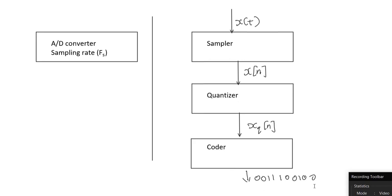Then comes the coder, which takes that analog signal and converts it into a digital stream of bits. For example, you can think about representing each number with a 16-bit two-byte value, four-byte value, or converting it into double numbers. What you do here depends on what type of coder you're picking. But the output of the coder is the digital information. Until then, it's all analog — over here it's analog and continuous time; over here it's analog but discrete time; over here it's analog, quantized, and discrete time; and over here it's digital and discrete time.